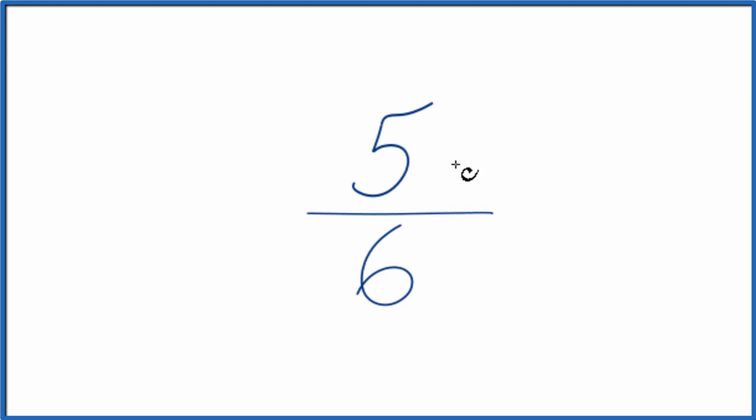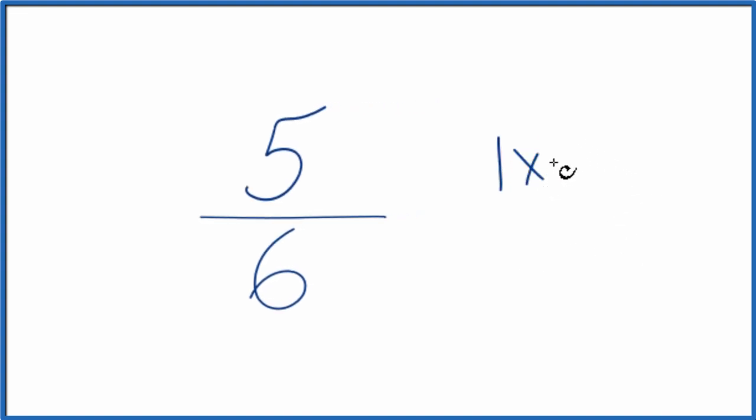If you think about the factors of 5 and 6, for 5 you have 1 times 5, 6 you have 1 times 6 and 2 times 3. And you see the greatest common factor is 1.